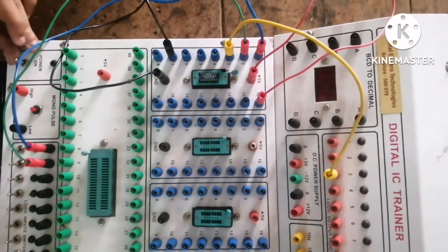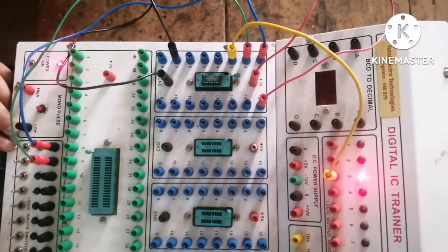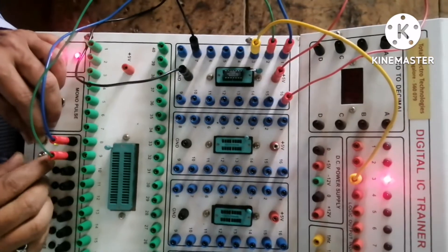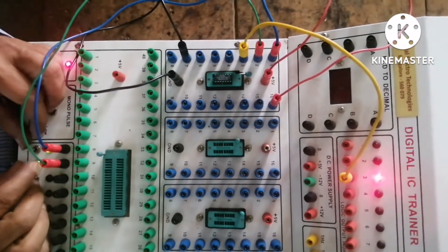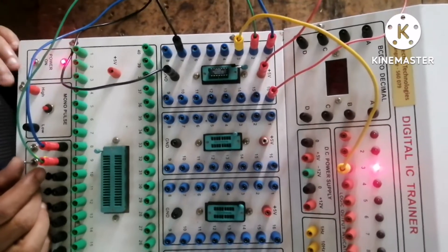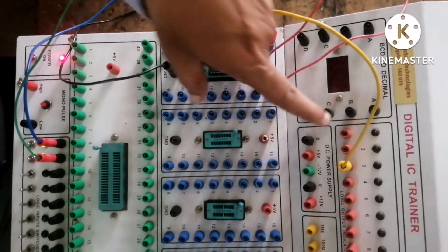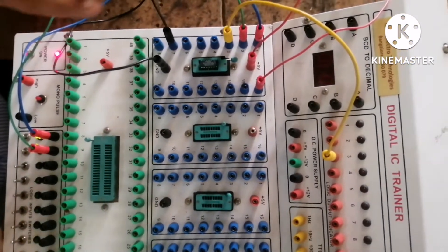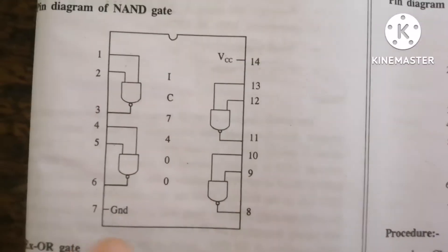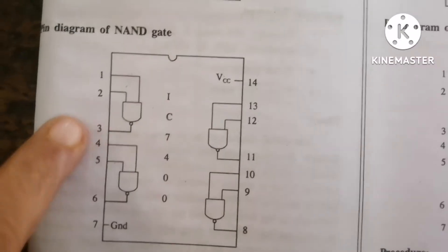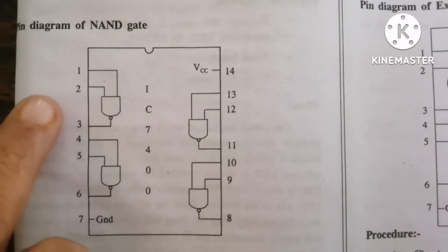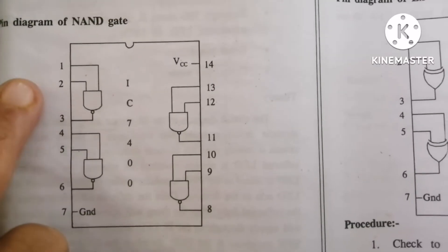When I turn on the power supply with both inputs at 00, as per the truth table it should show 1 — and it is clearly showing 1. For input 10 I get 1, and for 01 I also get 1. When both inputs are 11, it should show 0. As per the truth table, the IC is in good condition. This was gate number 1 inside the 7400, which contains 4 gates.